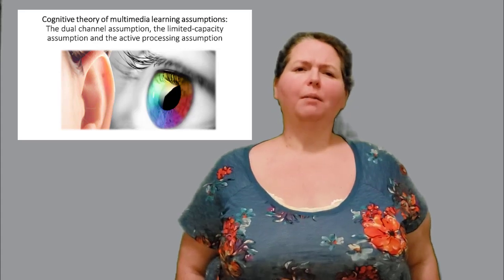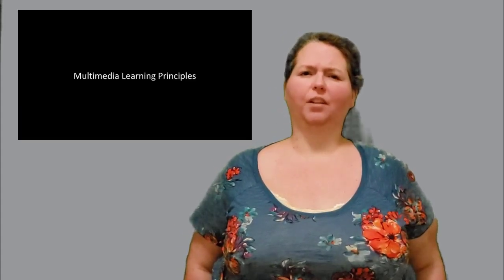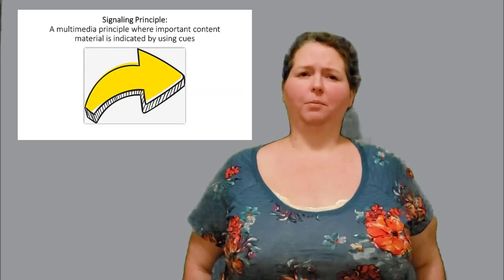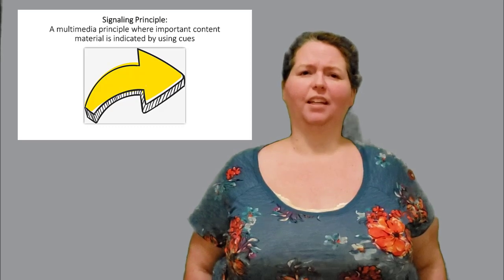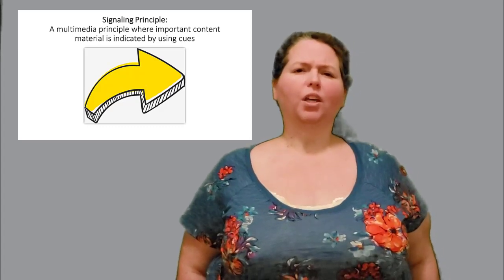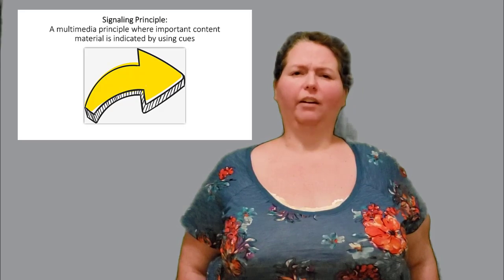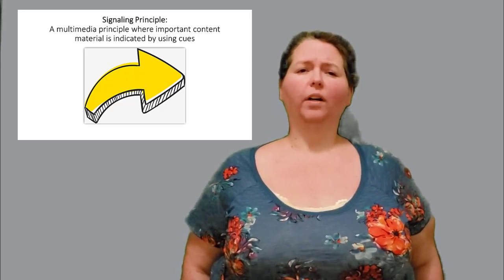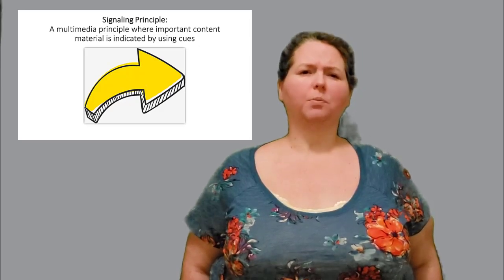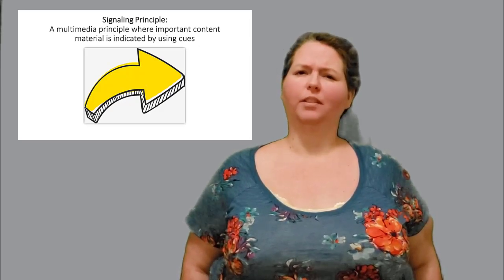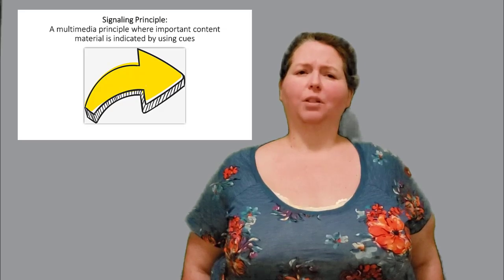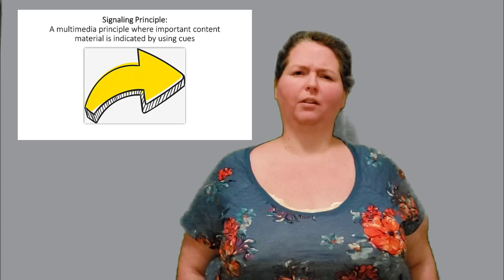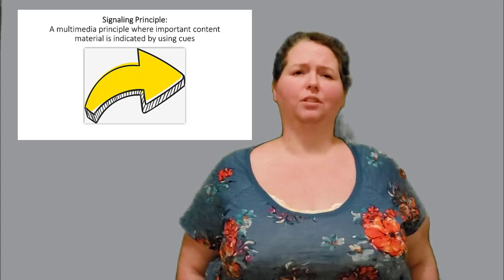There are three multimedia learning principles that connect to the cognitive load theory. The first is the signaling principle, a multimedia principle where important content is indicated by using cues such as bold print, arrows to highlight important information, or color coding words and sections. The signaling principle connects to the cognitive theory of multimedia because it reduces extraneous load — which happens when instructional materials are presented in a way that does not aid in student learning.